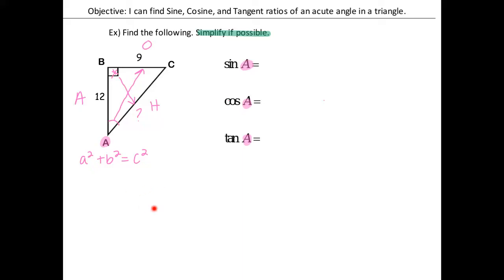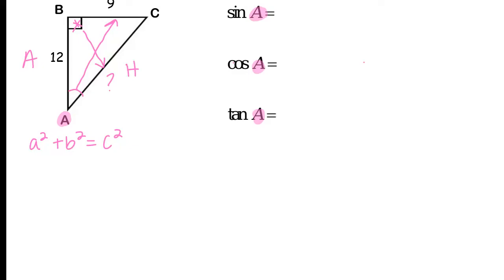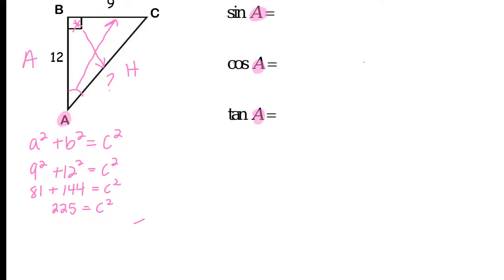Using the Pythagorean theorem: a squared plus b squared equals c squared, where c is the hypotenuse. So 9 squared plus 12 squared equals c squared. 9 squared is 81 and 12 squared is 144. 81 plus 144 equals 225, which is my c squared. 225 is actually a perfect square — the square root of 225 is 15. So c equals 15, meaning my hypotenuse is 15.